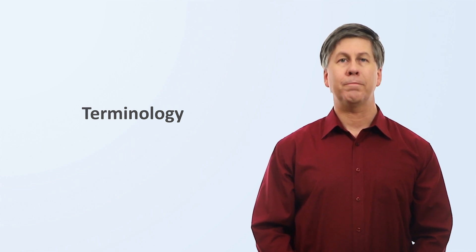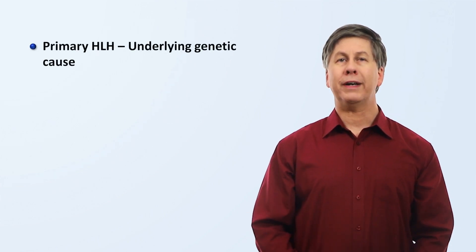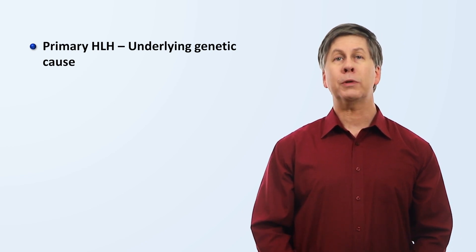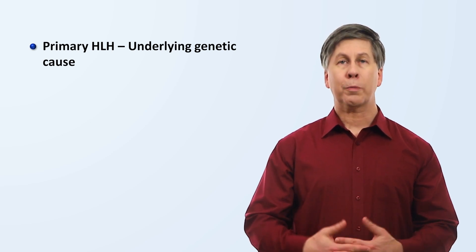There are several terms used to describe subtypes of HLH. Though not all experts agree on the preferred terminology, these are in common use today. Primary HLH is HLH associated with genetic mutations affecting immune system function. It usually presents at younger ages, but can less commonly present in older patients as well.